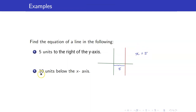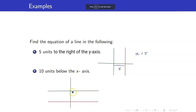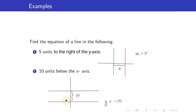What about a line 10 units below the x-axis? So it is always 10 units from the x-axis. Therefore, it is just a horizontal line. And the equation of this line is y equals negative 10.